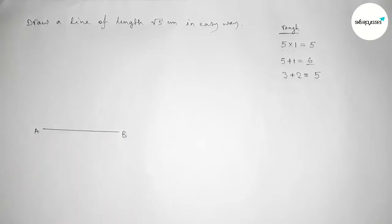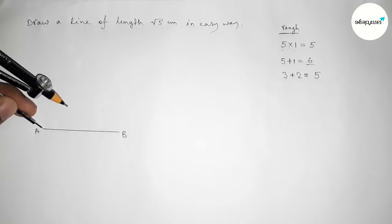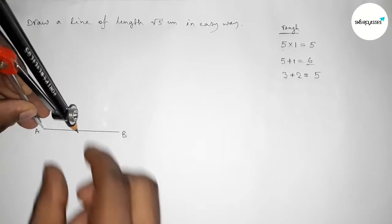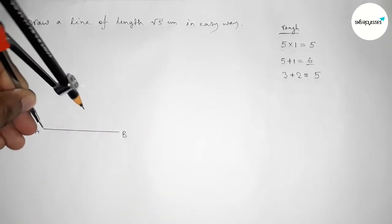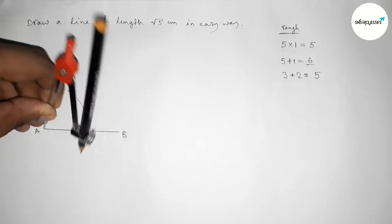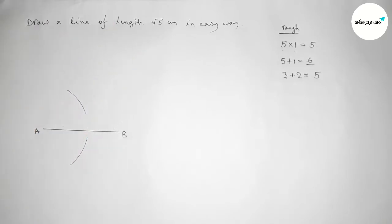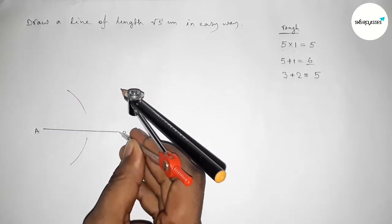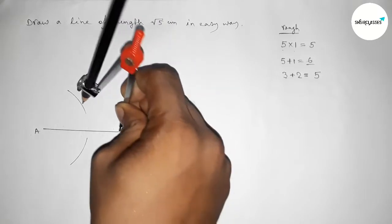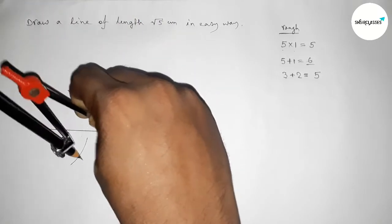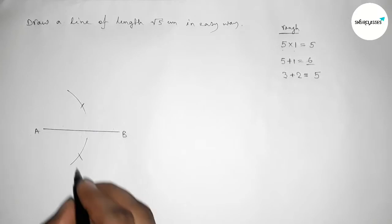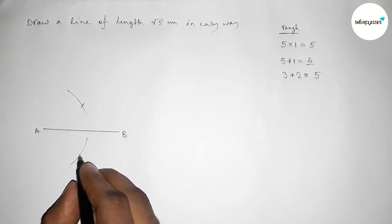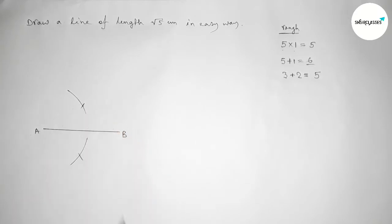Now we have to bisect the line AB using a compass. Putting the compass on point A and taking greater than half of AB, drawing an arc. Then putting the compass on point B with the same length and cutting arcs on both sides, so both curves intersect at two points.